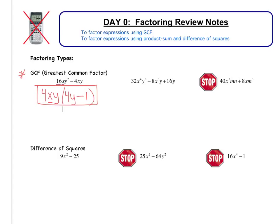Now, it's always a good idea to check your answer. To check this, you just multiply back out. So if I distribute, 4xy times 4y would be 16xy squared minus 4xy times 1 is just 4xy, which is what we started with.